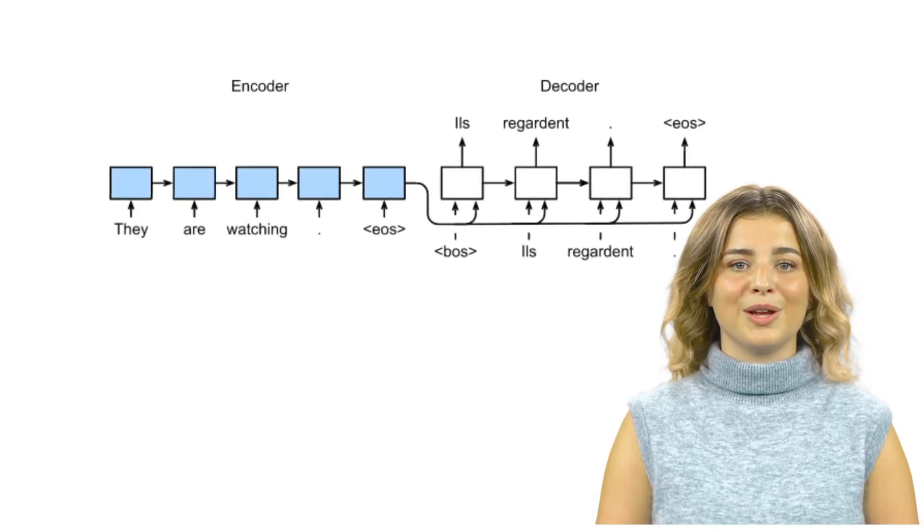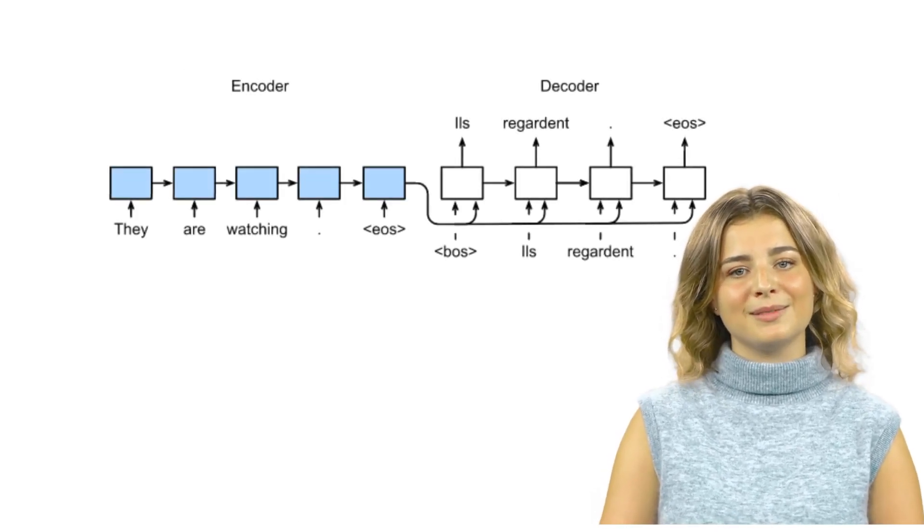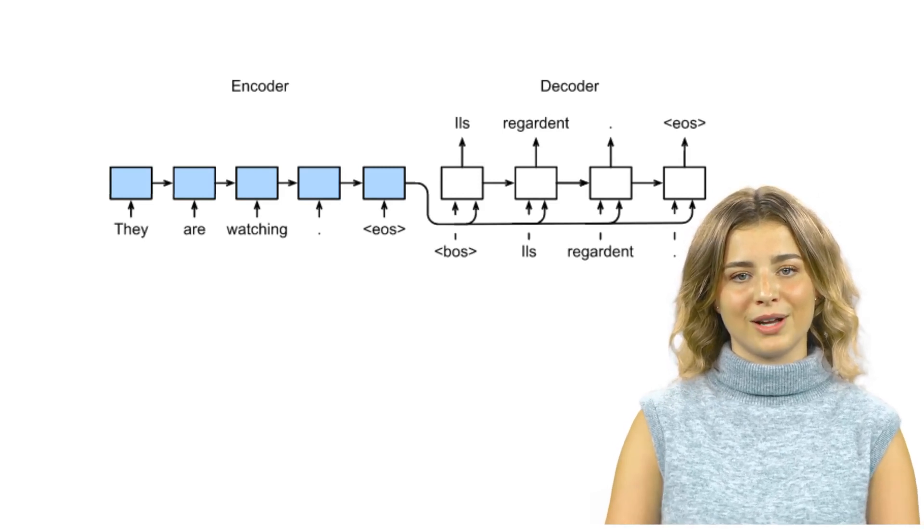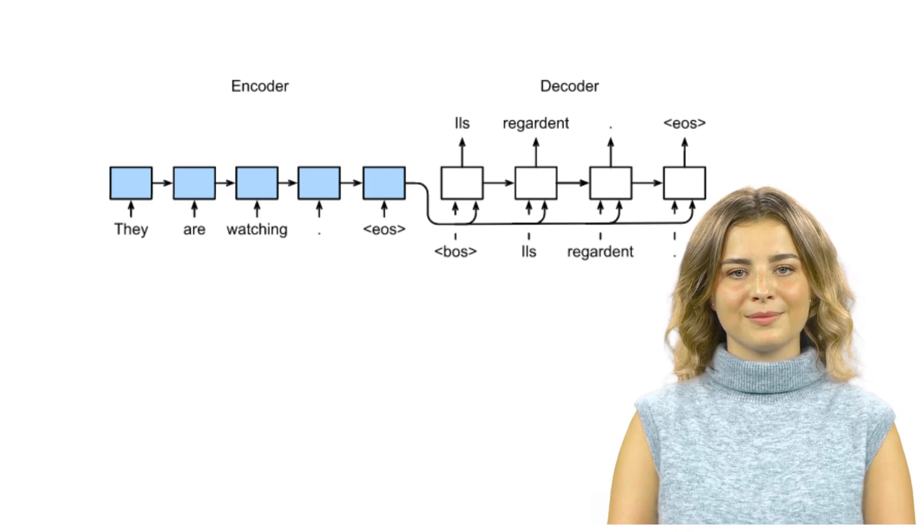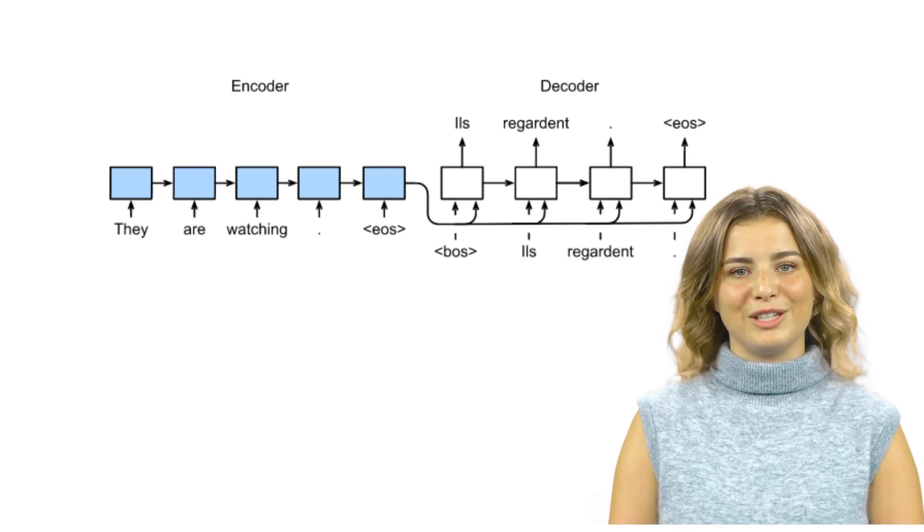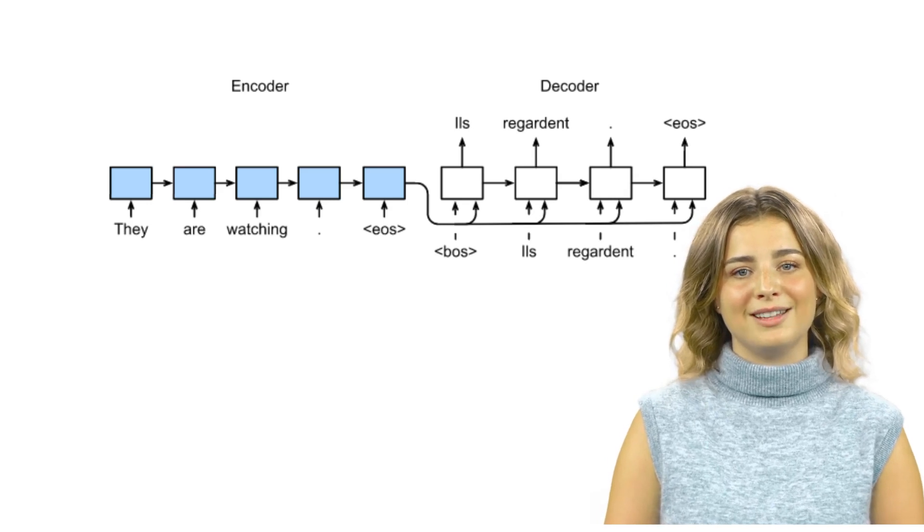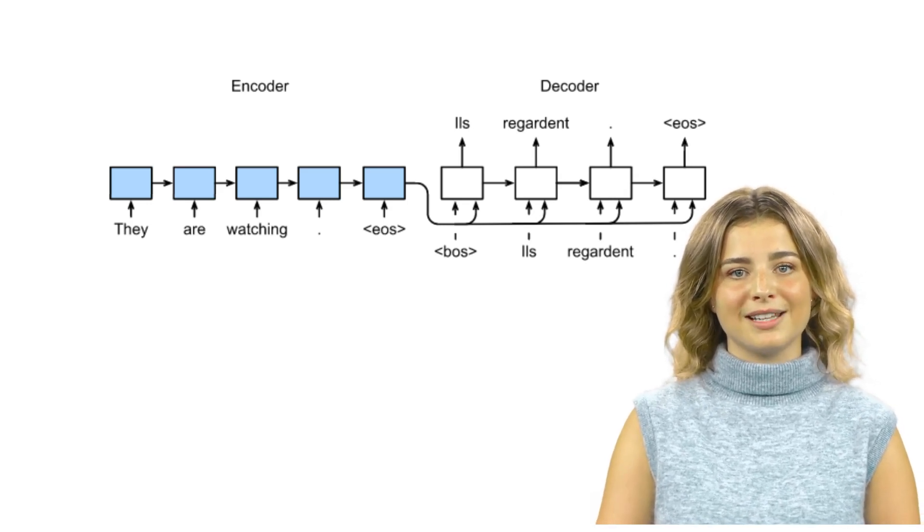To start with, let's explain what sequence-to-sequence learning is. It's a type of model used for tasks where both the input and the output are sequences, but not necessarily of the same length. These tasks include machine translation, translating English sentences to French for instance, speech recognition, and text summarization.